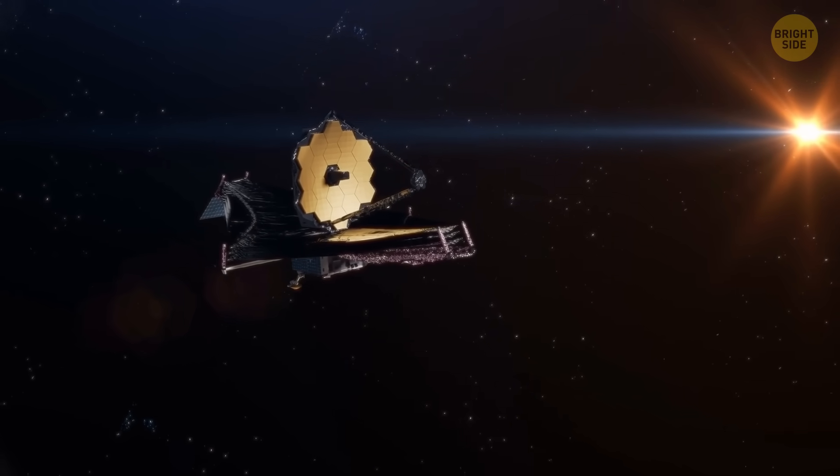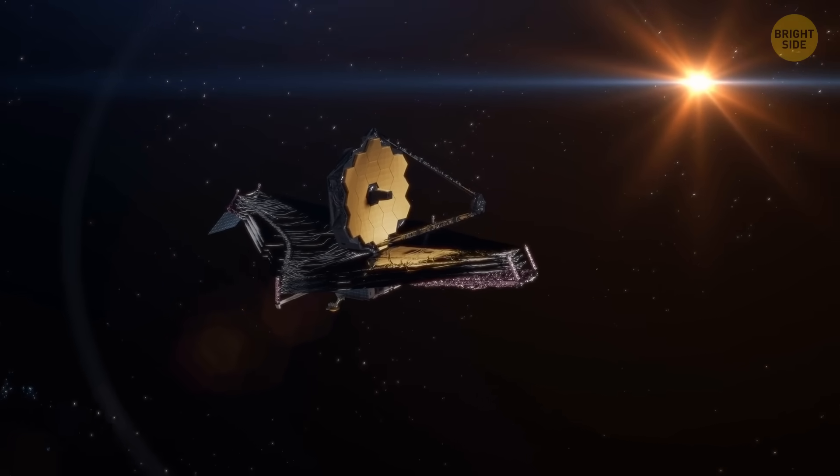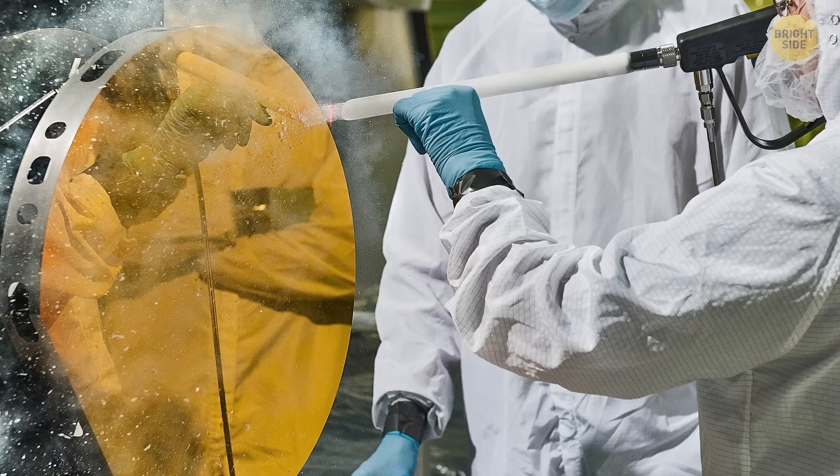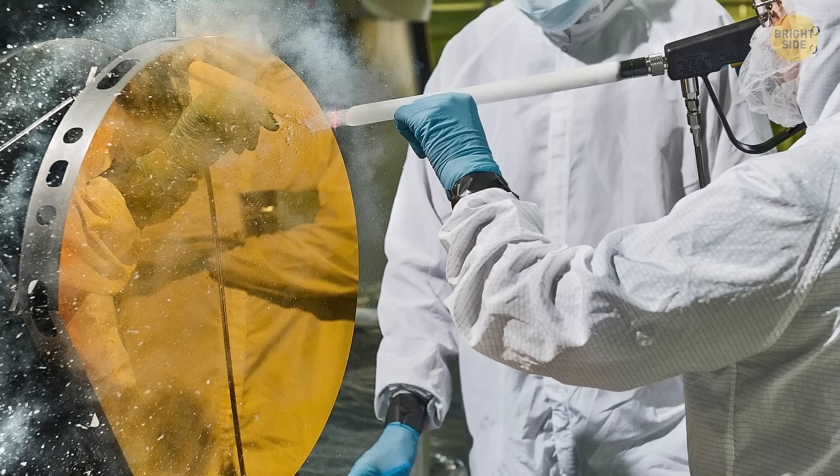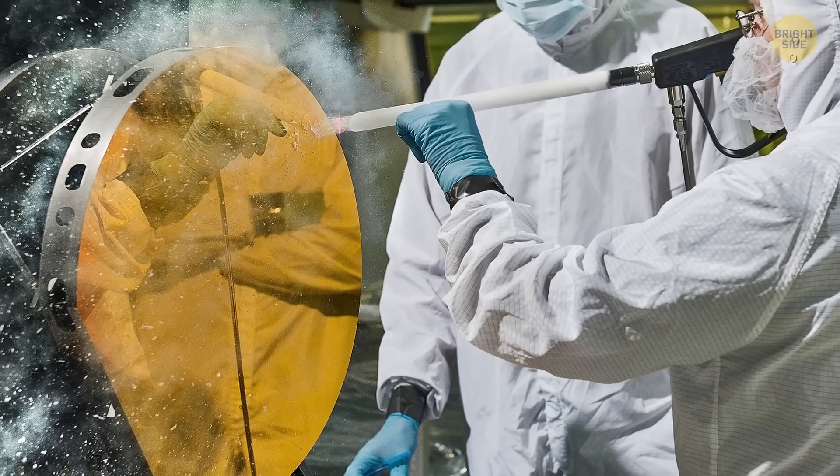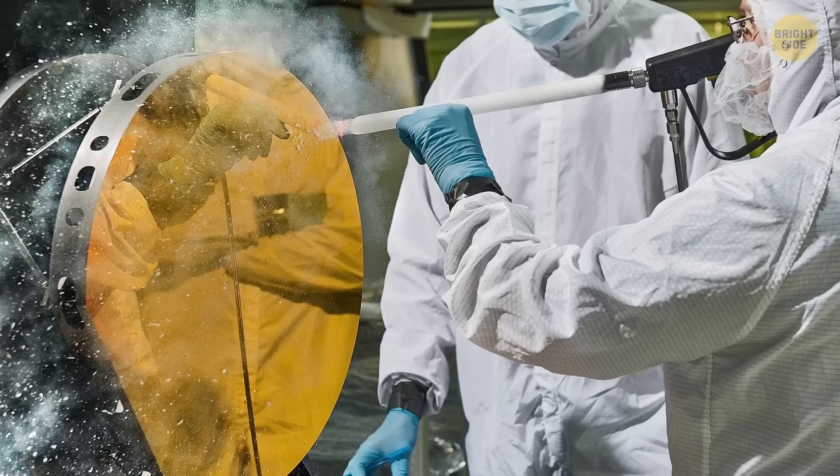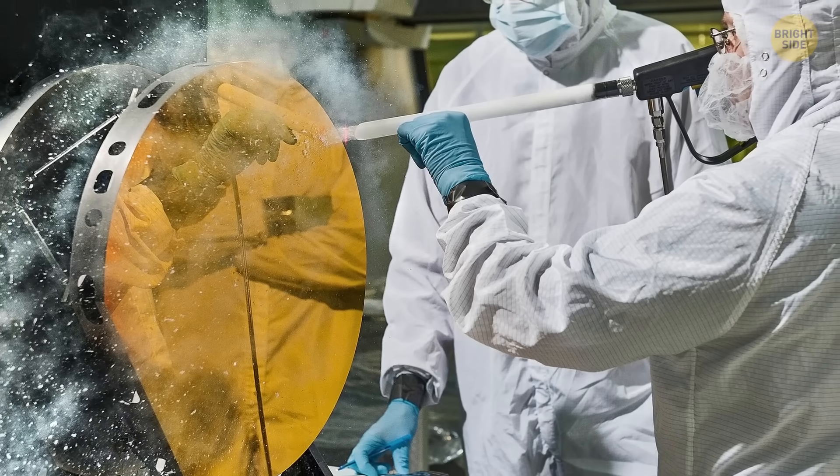When you look at them, the telescope's mirrors seem to be gold. But in reality, they're made of beryllium. This is a steel gray, lightweight, and brittle metal. A gold coating is applied to each mirror, that's true. But they can't be produced entirely out of gold, since this precious metal tends to expand and contract, even with small temperature changes.